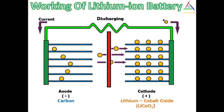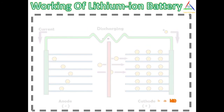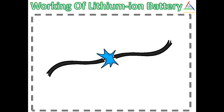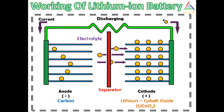The electrolyte used in a lithium ion battery is a lithium salt in an organic solvent. The separator is used to prevent contact between the cathode and anode so as to prevent electric short circuits, while it allows the transportation of ions needed to close the circuit during the passage of current in an electrochemical cell.